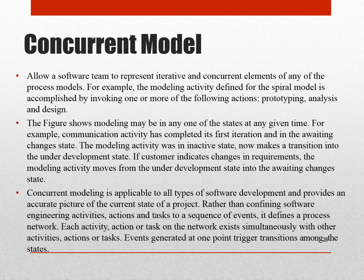The next is the concurrent model. It allows a software team to represent iterative and concurrent elements of any of the process models. For example, the modeling activity defined for the spiral model is accomplished by invoking one or more of the following actions: prototyping, analysis, and design. Modeling may be in any one of the states at any given time. For example, the communication activity has completed its first iteration and is in the 'awaiting changes' state, while the modeling activity transitions from inactive into the 'under development' state. If the customer indicates changes in requirements, the modeling activity moves from 'under development' into the 'awaiting changes' state. Concurrent modeling is applicable to all types of software development and provides an accurate picture of the current state of the project.